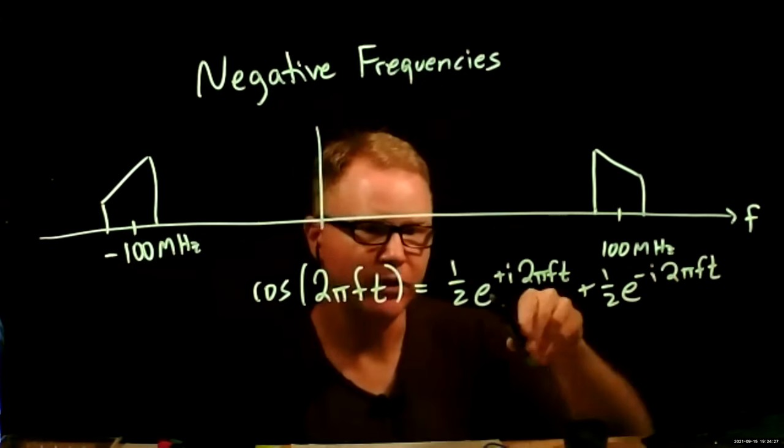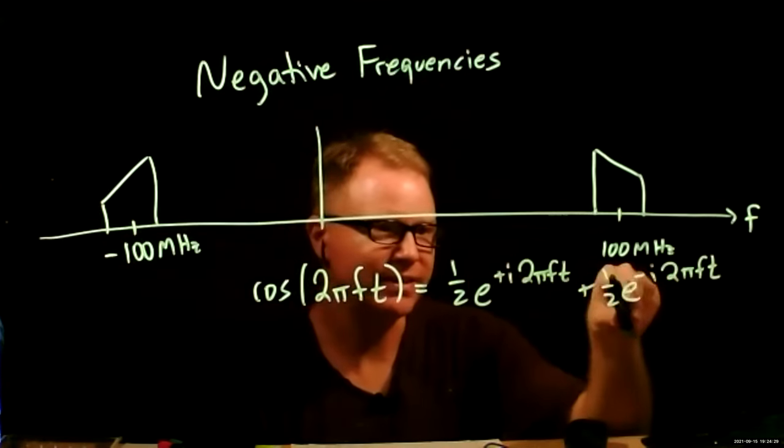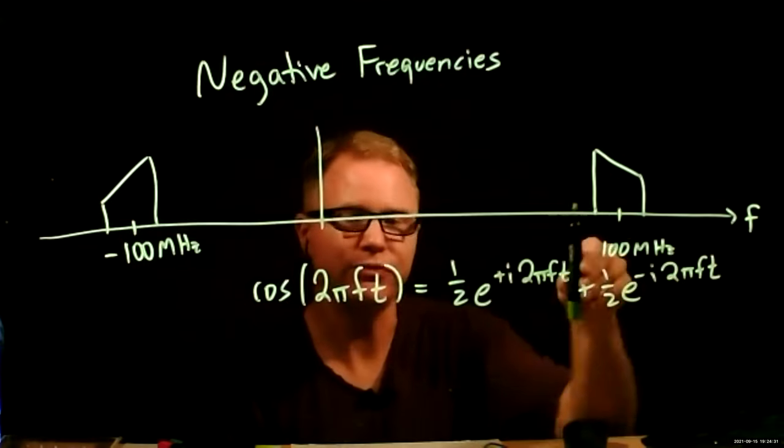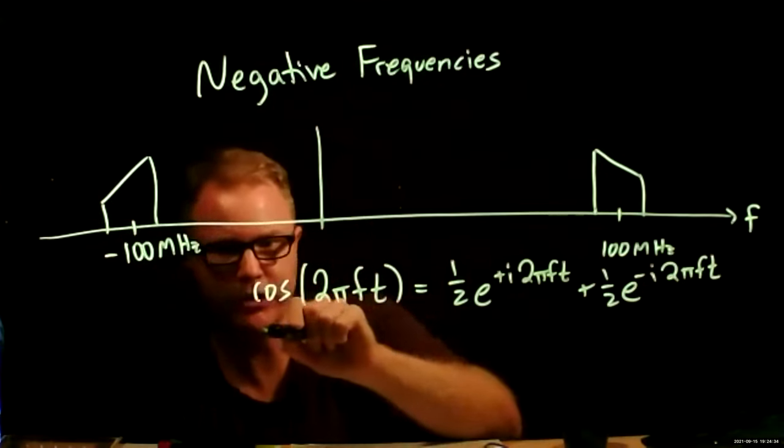So if the frequency spectrum is just plotting the strength of these coefficients, there's just as much stuff at positive f as negative f for any f, and any real signals made up of a bunch of cosines and a bunch of sines.